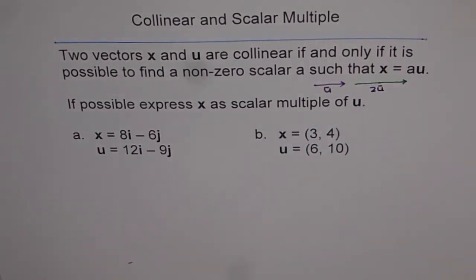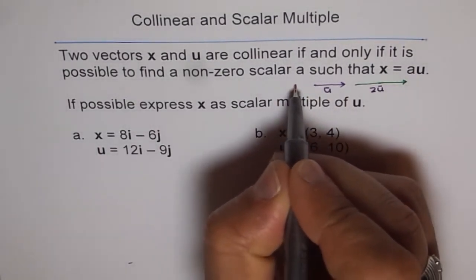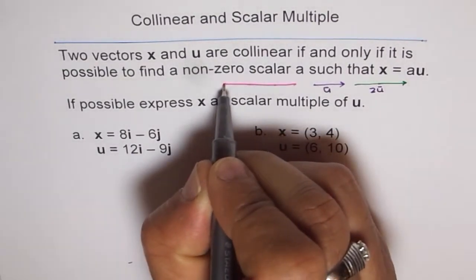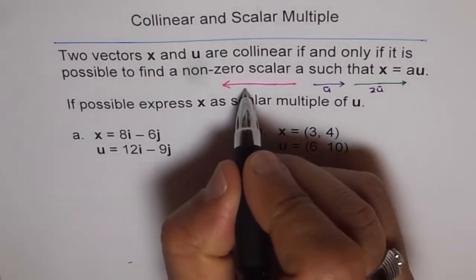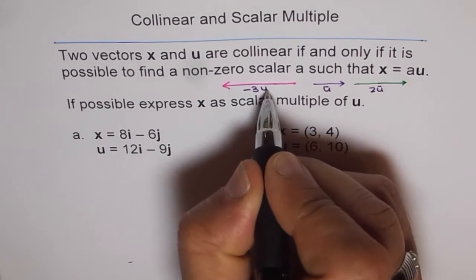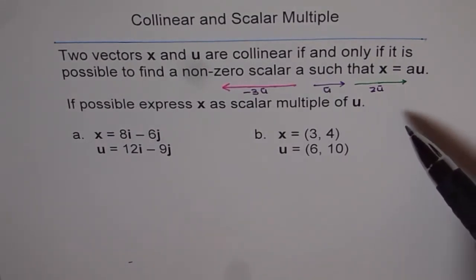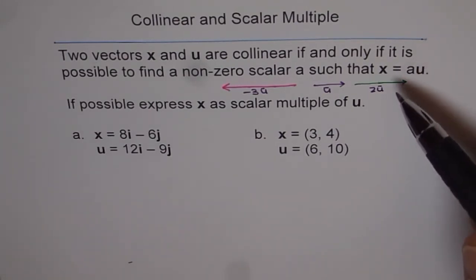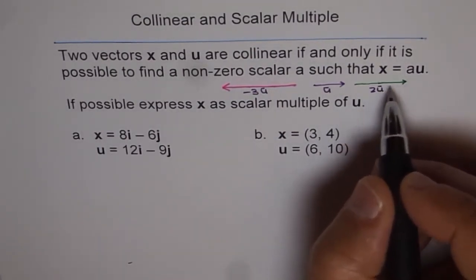And how about minus three times u? Minus means the direction reverses, and it will extend one, two, and three units in the opposite direction. So this is minus three times u. These are approximate drawings just to illustrate the point. The numbers we write before u are all real numbers; they multiply the vector and don't change its direction at an angle — the change is either the same direction or opposite direction.